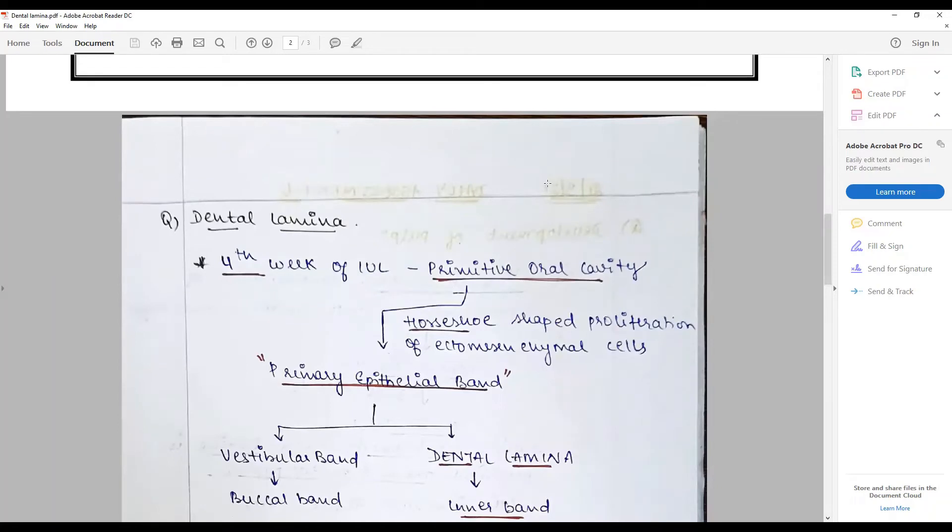You have to start with where and when and how it starts. About the fourth week of intrauterine life in the primitive oral cavity, there is a horseshoe-shaped proliferation of ectomesenchymal cells deep into the tissues, surrounding ectomesenchymal cells. That is called the primary epithelial band.